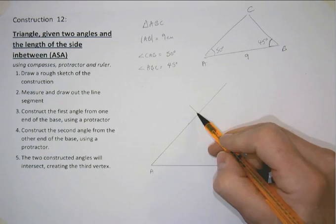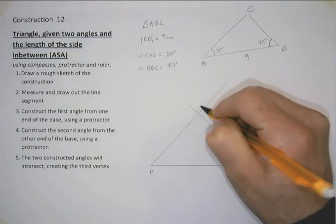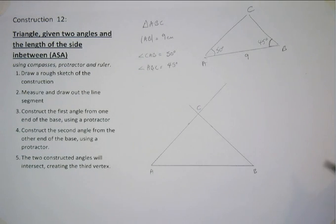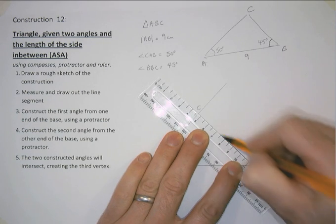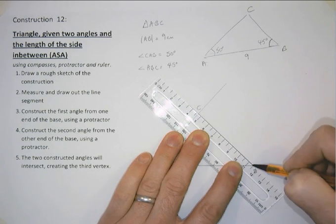Again, draw a line from B through this marker. And where they intersect is my point C. You may wish to just, if it's construction lines, you may wish to firm those lines up, up to C.